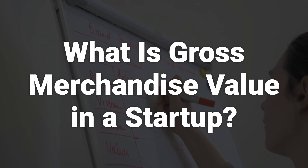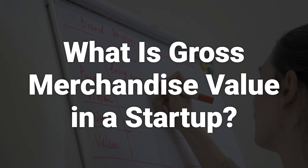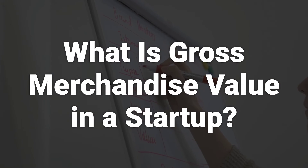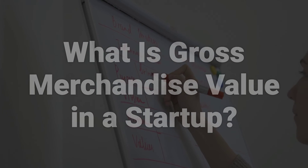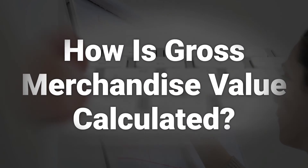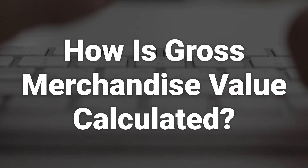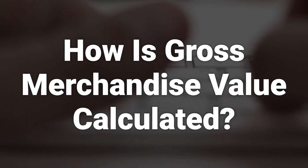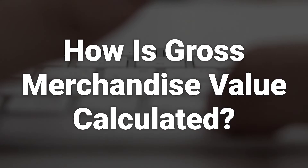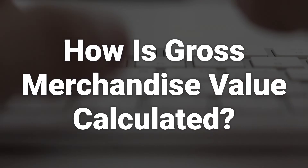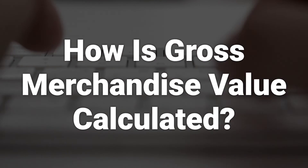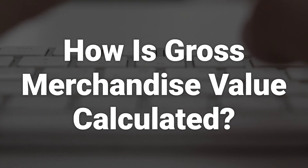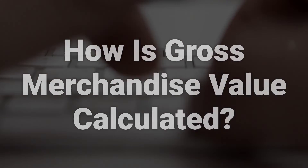GMV is the gross merchandise revenue — the total revenue that a company generates through the sale of its goods or services. It is calculated by multiplying the total amount of goods sold by their sales price in a given period. The formula is: GMV equals sales price of goods multiplied by number of goods sold.